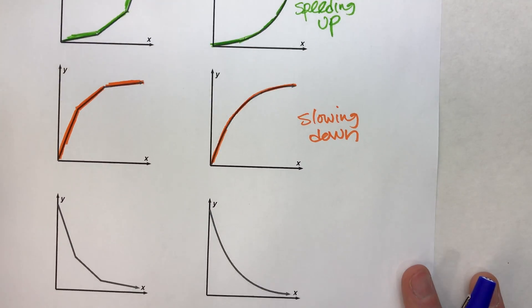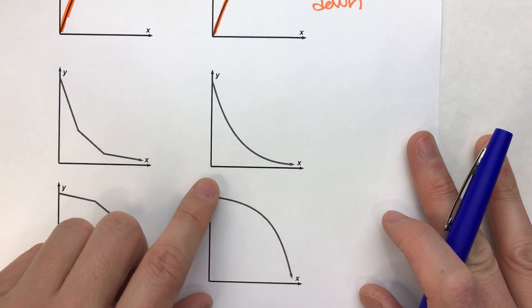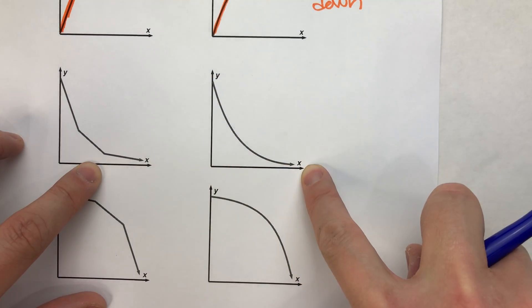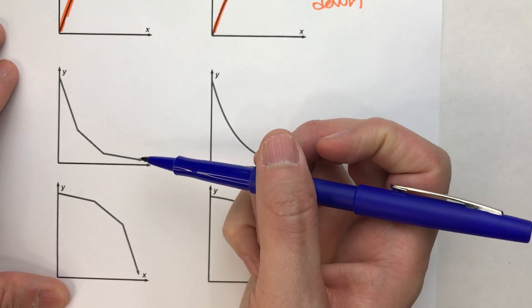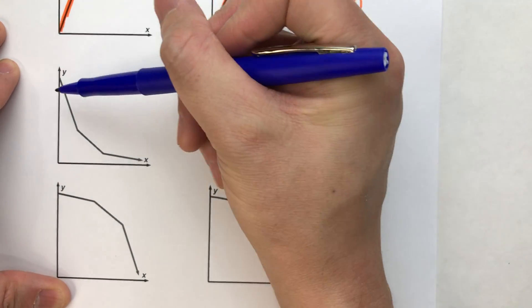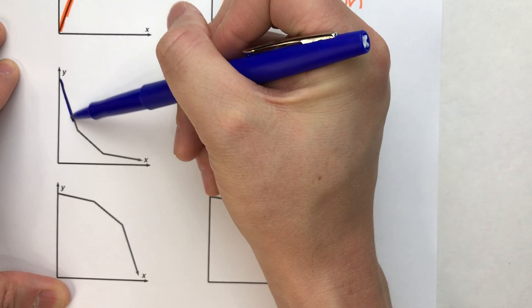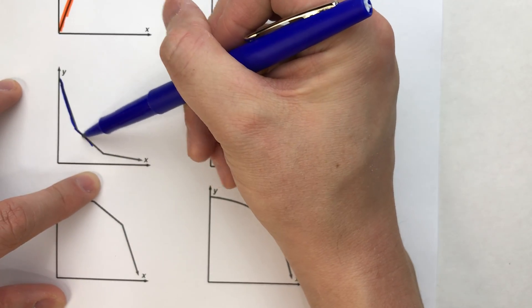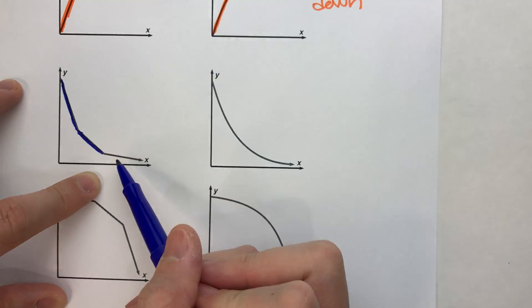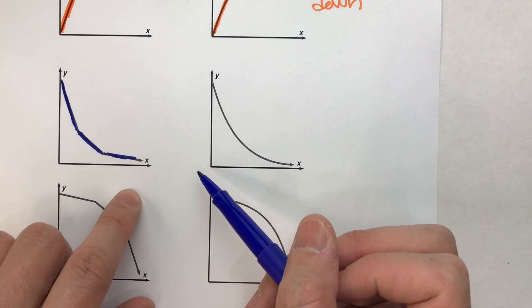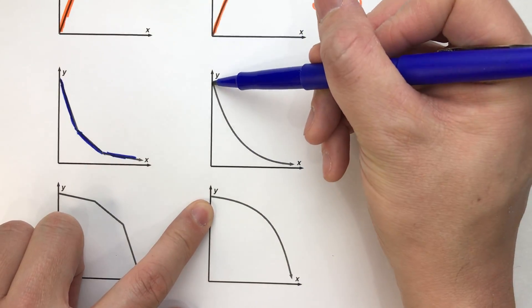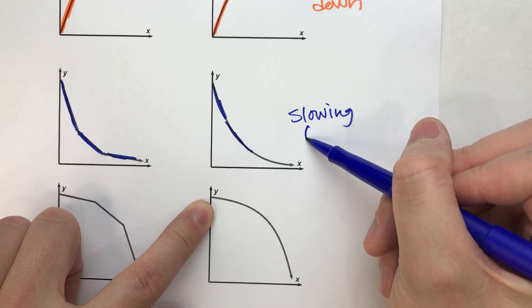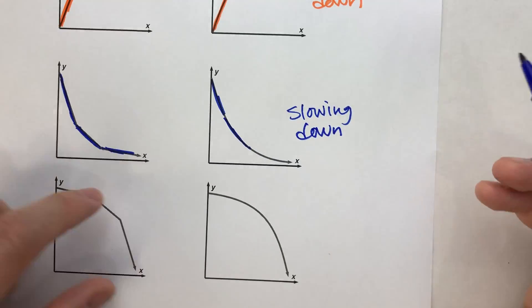Now let's look at some decreasing ones. So notice this one. This one is going down. It's decreasing. So let's look at the segments to kind of understand what's going on. Notice at first it's decreasing very sharply. So it's a little less steep and then near the bottom it's almost flat. So this is decreasing but the rate at which it's decreasing is slowing down.